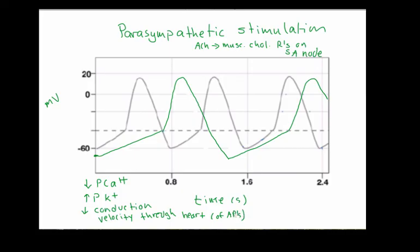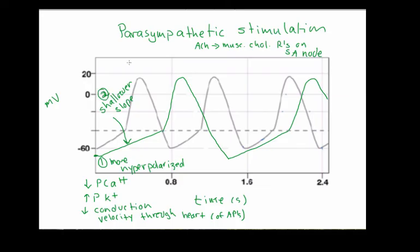So what we see with parasympathetic stimulation is: one, more hyperpolarized — it starts out more negative; two, a slower rise to threshold, or a shallower slope of the pacemaker potential — look how much more time it takes to get to threshold; and three, fewer beats per minute. That's parasympathetic activation — a decreased heart rate. Remember, there are no direct effects on the pumping cells of the heart with parasympathetic stimulation.